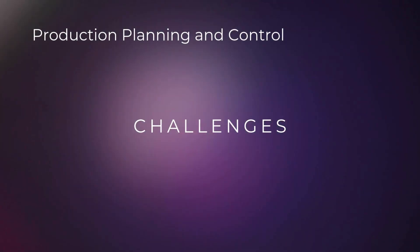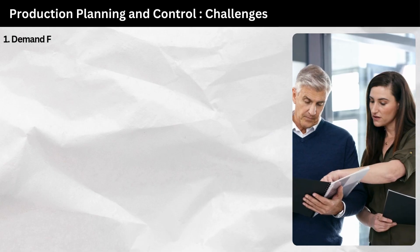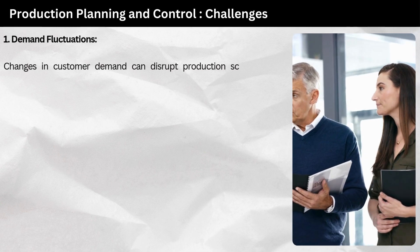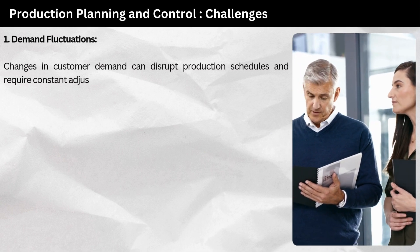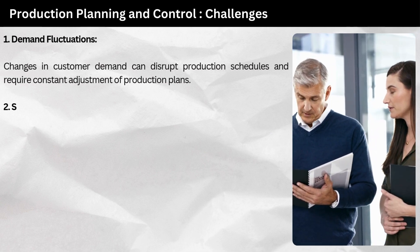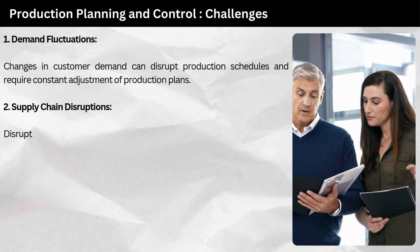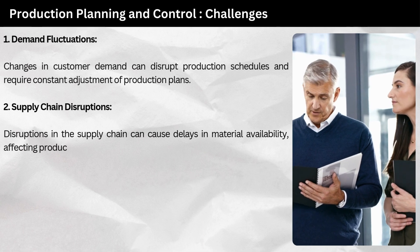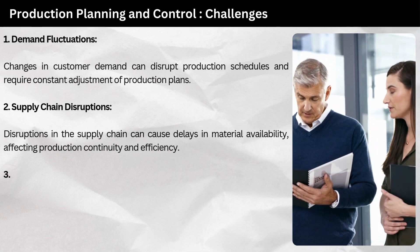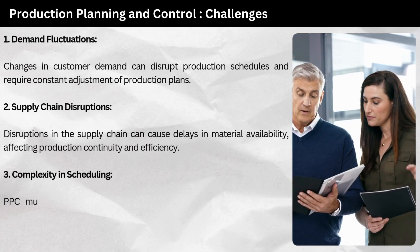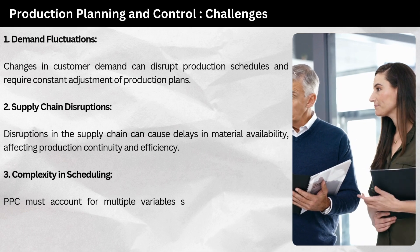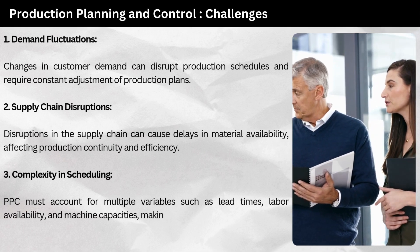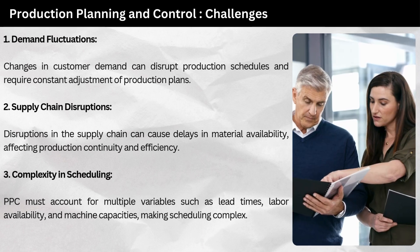Challenges in production planning and control. First, demand fluctuations: changes in customer demand can disrupt production schedules and require constant adjustment of production plans. Second, supply chain disruptions: disruptions in the supply chain can cause delays in material availability, affecting production continuity and efficiency. Third, complexity in scheduling: PPC must account for multiple variables such as lead times, labor availability, and machine capacities, making scheduling complex.